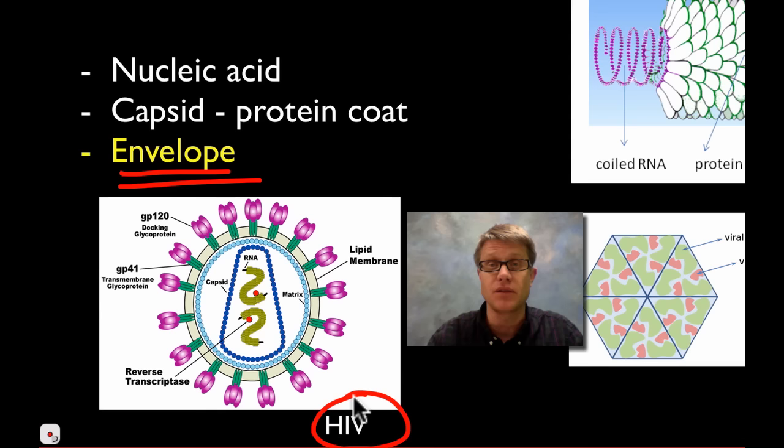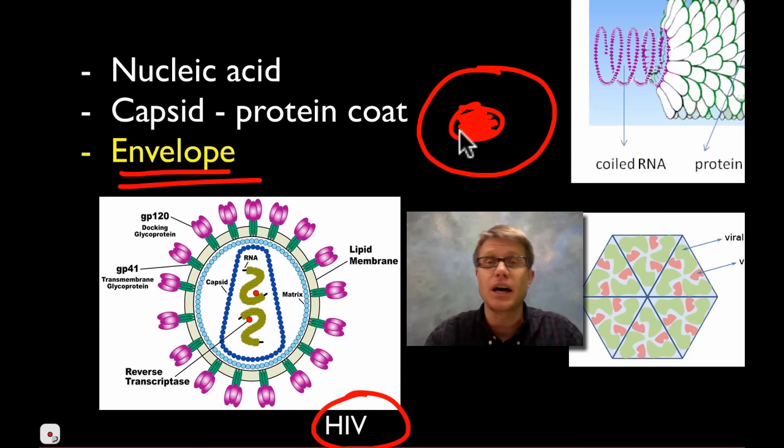But a lot of viruses are also going to have an envelope. So they're going to have a lipid bilayer. This right here would be human immunodeficiency virus, so the virus that causes AIDS. And you can see here that we've got RNA on the inside, we've got a capsid or a protein coat around the outside, but now we've got this lipid bilayer around the outside or this envelope.